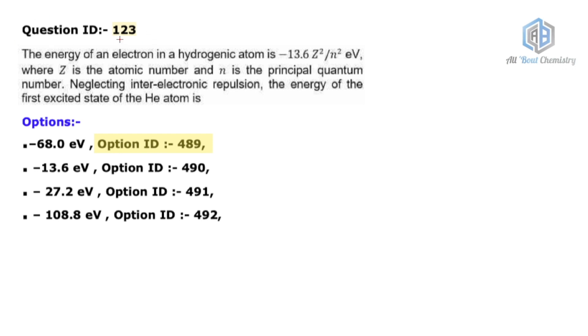This particular question is also correct actually. The Question ID is 123. It says that the energy of electron in a hydrogenic atom is -13.6Z²/n² electron volt, where Z is the atomic number and n is the principal quantum number. Neglecting the inter-electronic repulsion, the energy of the first excited state of the helium atom is.